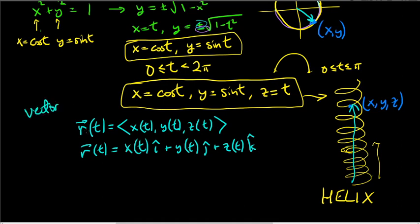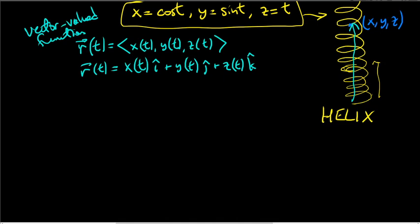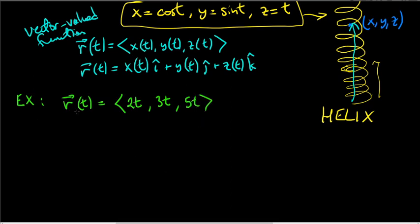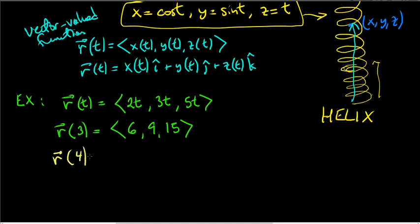Vector-valued functions are functions of t whose values are vectors. At each t you get a different vector. For example, suppose r(t) = ⟨2t, 3t, 5t⟩. Then r(3) = ⟨6, 9, 15⟩, which is a single vector. For t = 4, you get ⟨8, 12, 20⟩ — a different vector.